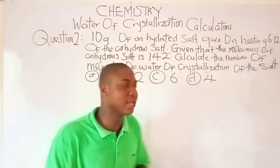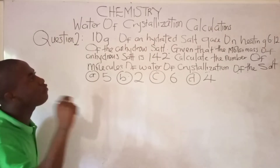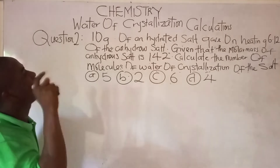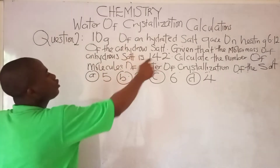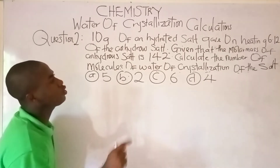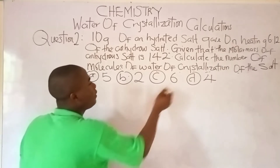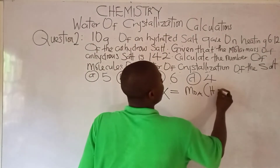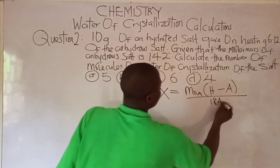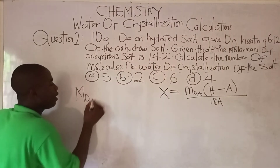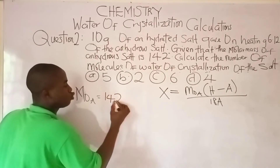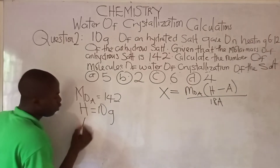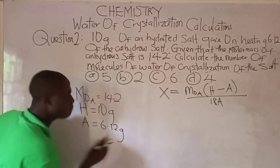The second question: 10 grams of hydrated salt gave on heating 6.12 grams of the anhydrous salt. Given that the molar mass of the anhydrous salt is 142, calculate the number of molecules of water of crystallization of the salt. We need to find X using X = MOA × (H − A) / (18A). MOA = 142, H = 10 grams, A = 6.12 grams.